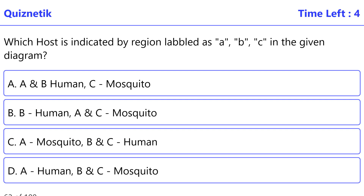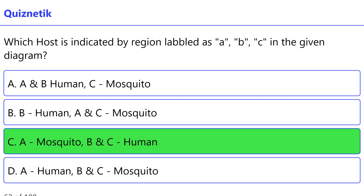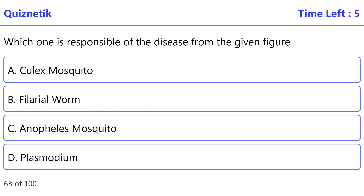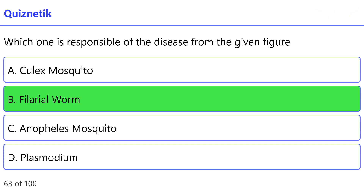Which host is indicated by the regions labelled as A, B, and C in the given diagram? The correct option is C — A: mosquito, B and C: human. Which one is responsible for the disease shown in the given figure? The correct option is B — Filarial worm.